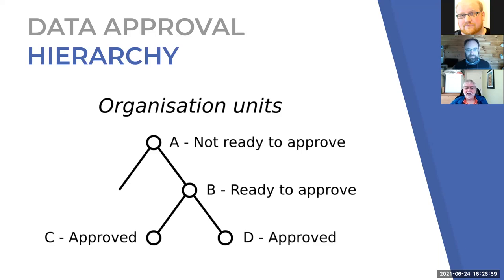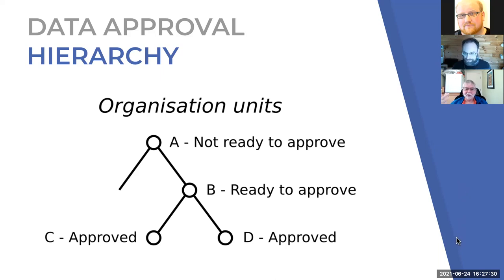Data approval always follows a hierarchy. You have one or more levels, and you approve data starting at the lowest level, then moving up. In this example, C and D might be facilities — once they've approved their data, B (at the district level) can approve its data including all org units underneath it. Organization unit A is not yet ready to approve because not all of its children have approved. The hierarchy always flows from lower levels to higher levels.